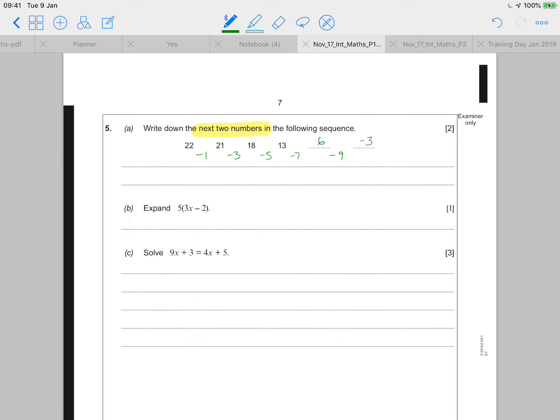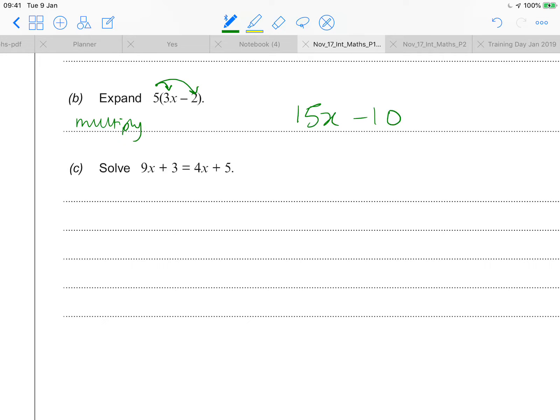Expand means multiply. So I need to multiply everything inside this bracket by five. Five lots of three x. And then five lots of minus two. And that's it. Nothing more. And then part C, this is a solve question. So I've got three steps. And if you've been in my maths class, I always do these the same way.